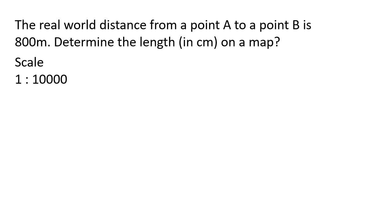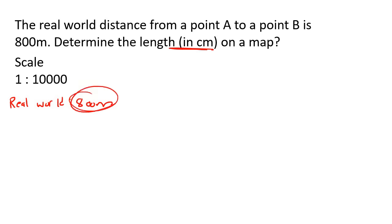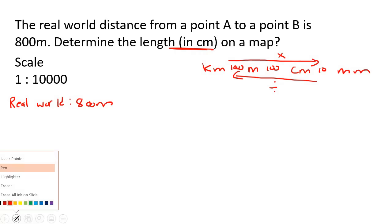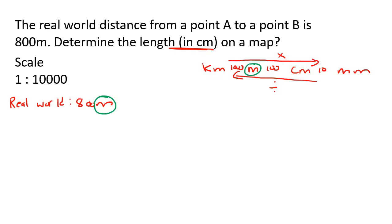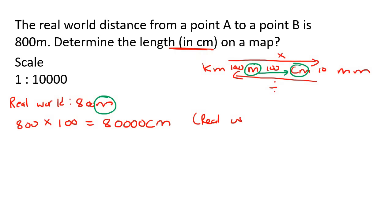Let's do another example. The real world distance from point A to point B is 800 meters. Determine the length in centimeters on a map. Let's quickly change this into centimeters using our conversions. We are going from meters to centimeters, so we're going to the right and we multiply by 100: 800 multiplied by 100 gives us 80,000 centimeters. That is still the real world — we've just converted from meters to centimeters.